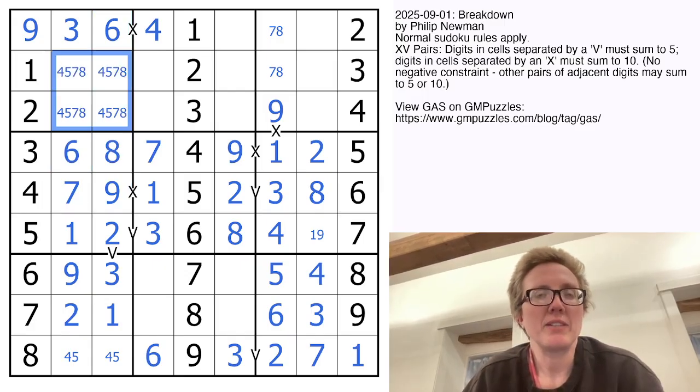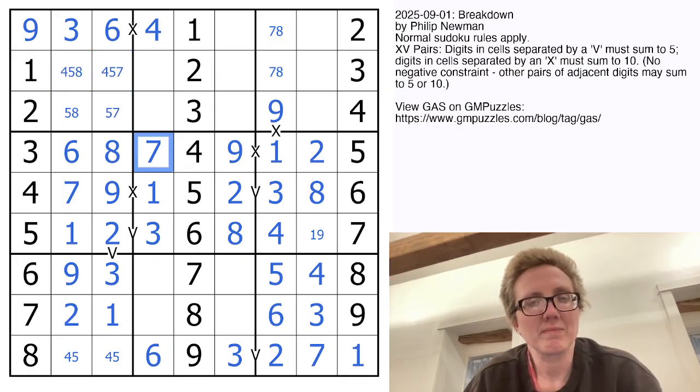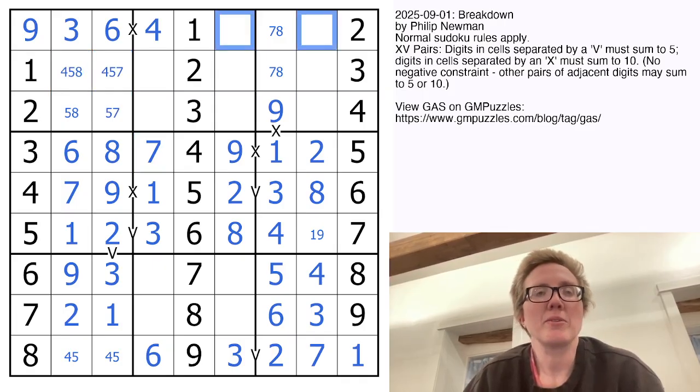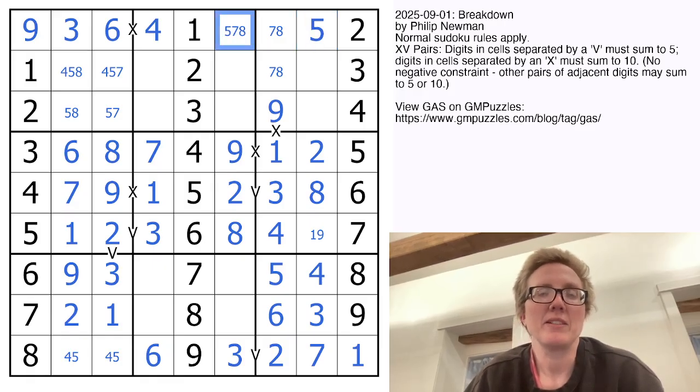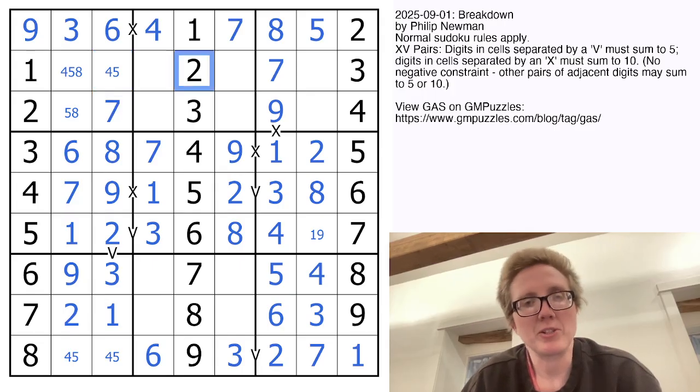So now I need 4, 5, 7, and 8 to finish this region. I'll simplify that based on what digits I'm seeing. In this row, I need a 5, a 7, and an 8. That has to be the 5. 7 and 8. And because there's a 7 there now, this has to be the 7 in this region.